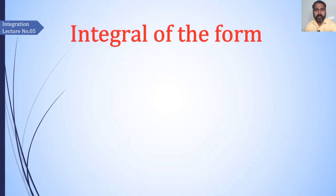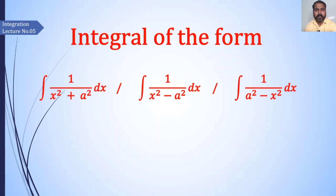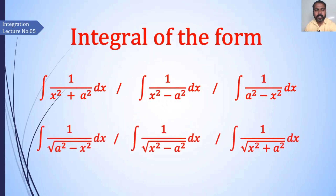This is our fifth lecture on indefinite integration, which is based on integrals of the form: integration of 1 upon x² plus a², or 1 upon a² minus x², or 1 upon root of a² minus x², or 1 upon root of x² minus a², or 1 upon root of x² plus a². In short, the numerator contains 1 and the denominator contains two terms — one is a variable squared and the other is a constant squared.